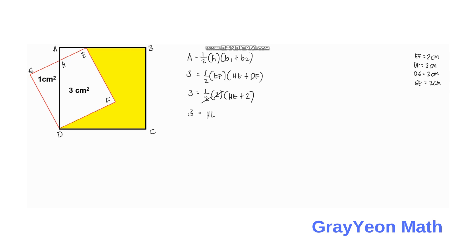Substituting EF equals 2 and DF equals 2, this simplifies to: 3 equals HE plus 2, so HE equals 3 minus 2, therefore HE equals 1 centimeter.